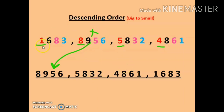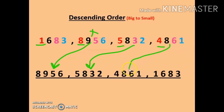Now consider the remaining 3 numbers with thousands digits 1, 5, and 4. Five is the biggest, so we write 5832 at second place. Next is 4861 at third place. As 1 is the smallest, we write 1683 at fourth place.